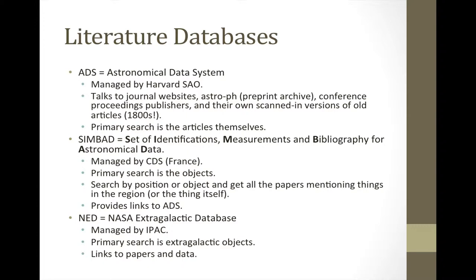The biggest workhorse that people think about when they think of literature databases is ADS, the Astronomical Data System. This is an archive managed by Harvard and the Smithsonian Astrophysical Observatory. It talks to the journal websites, to Astro-PH which is the preprint archive, to conference proceedings publishers, and they have worked really hard to scan in old articles back even into the 1800s. Their primary search approach is to work with the articles themselves.